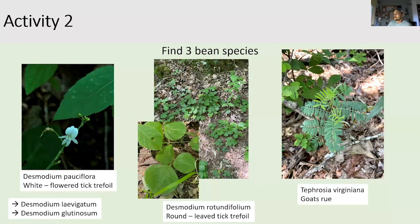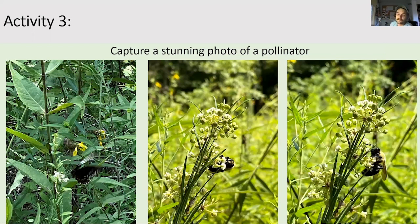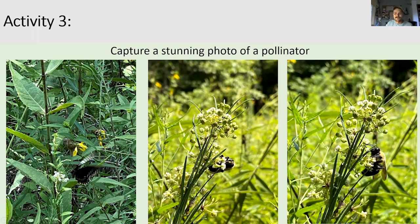Activity number three: capture a stunning photo of a pollinator. While sitting at the end of the hike, I started capturing some photos — these are in progressing order from my worst shot to my best shot. Not so great, getting better, and then one that could start winning awards — that one is fantastic. There are so many opportunities to capture really good shots out there, with lots of butterflies, milkweeds, and asters all over the place with pollinators on them.